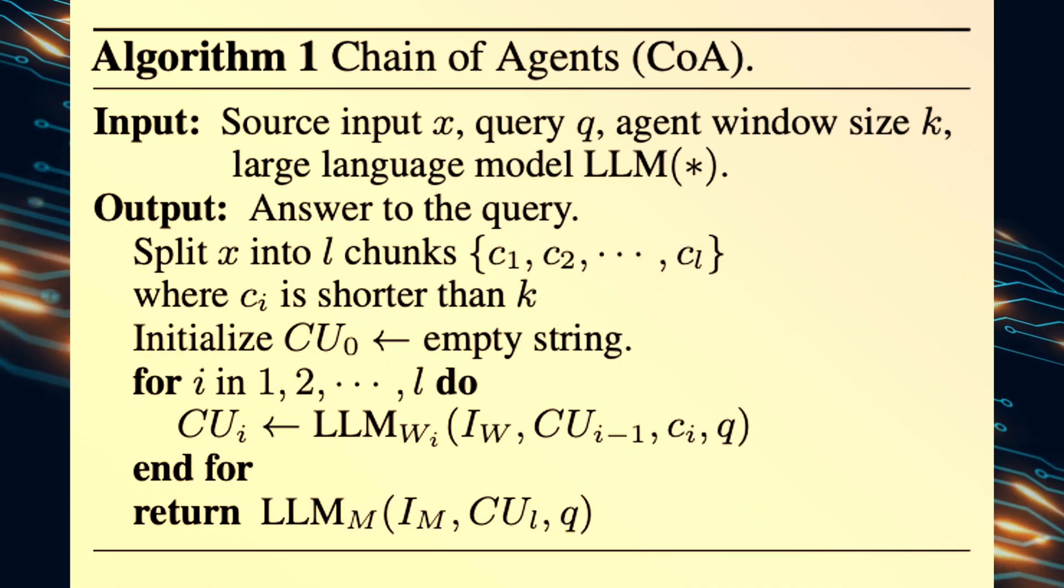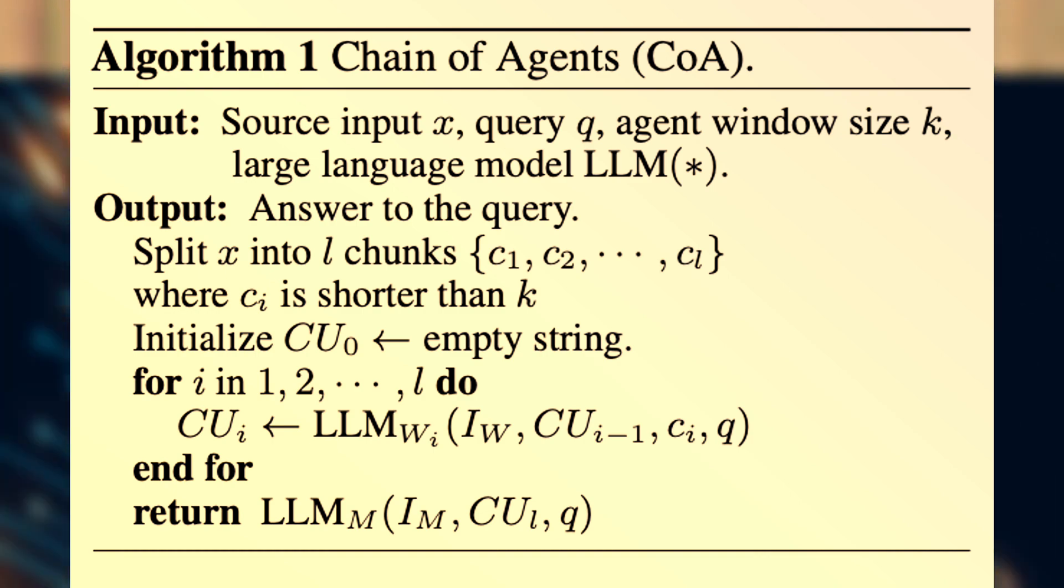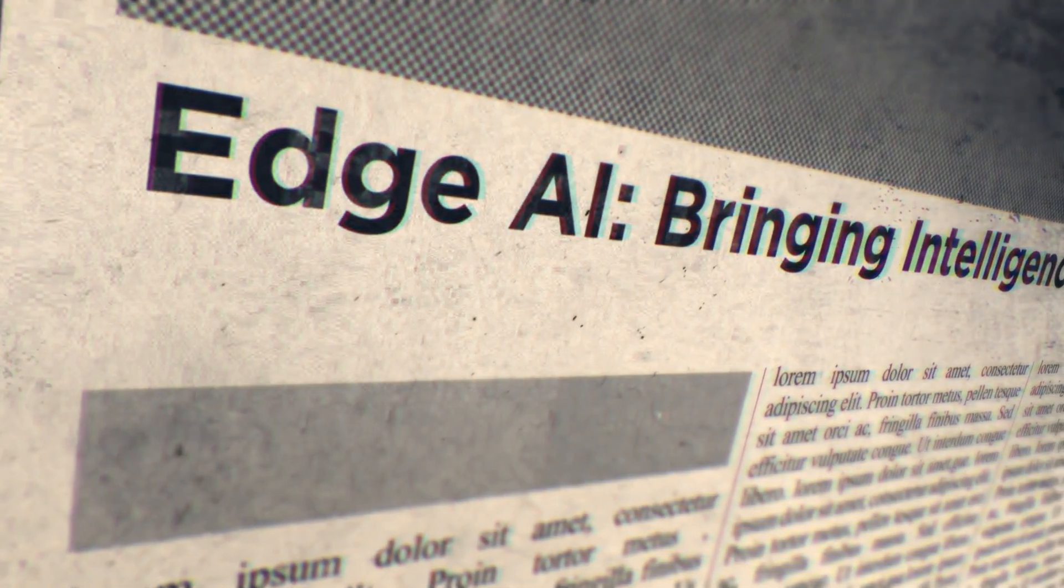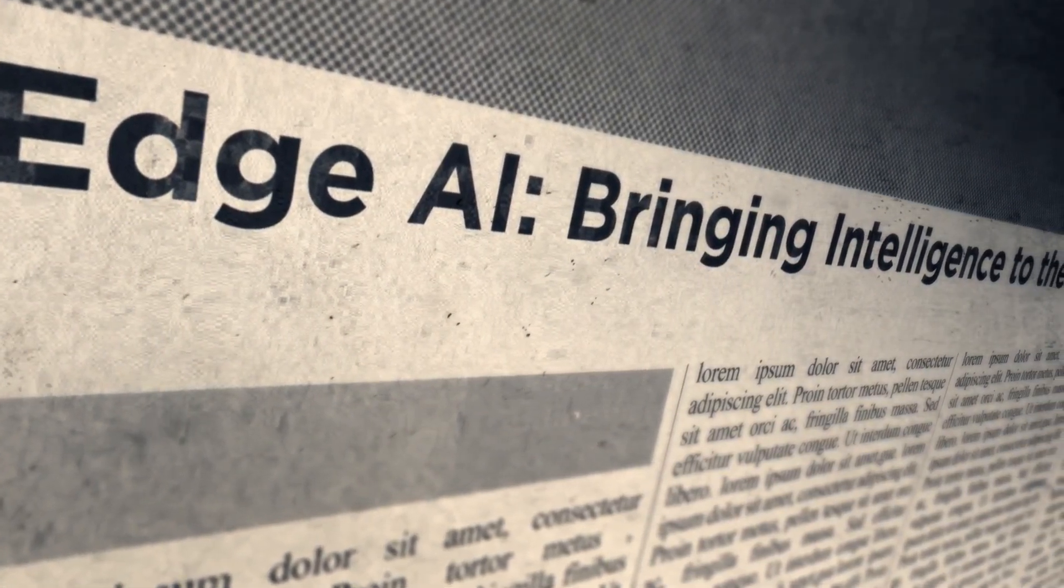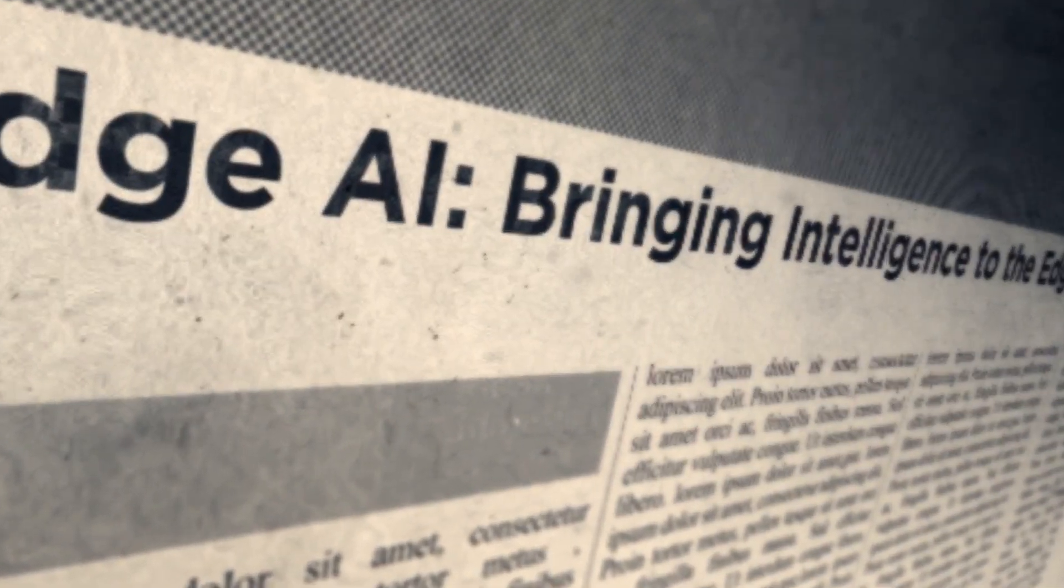Techniques like chain of thought and least to most prompting have decomposed reasoning into smaller steps. COA uniquely supports reasoning across distributed agents, enabling tasks that surpass the context limit of a single LLM.